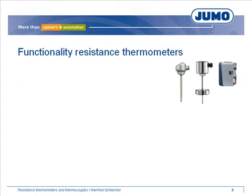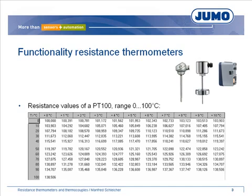Resistance thermometers change the ohmic resistance when the temperature changes. The most commonly used resistance material for industrial measurement technology is platinum. The following chart shows the resistance values of common resistance thermometers.